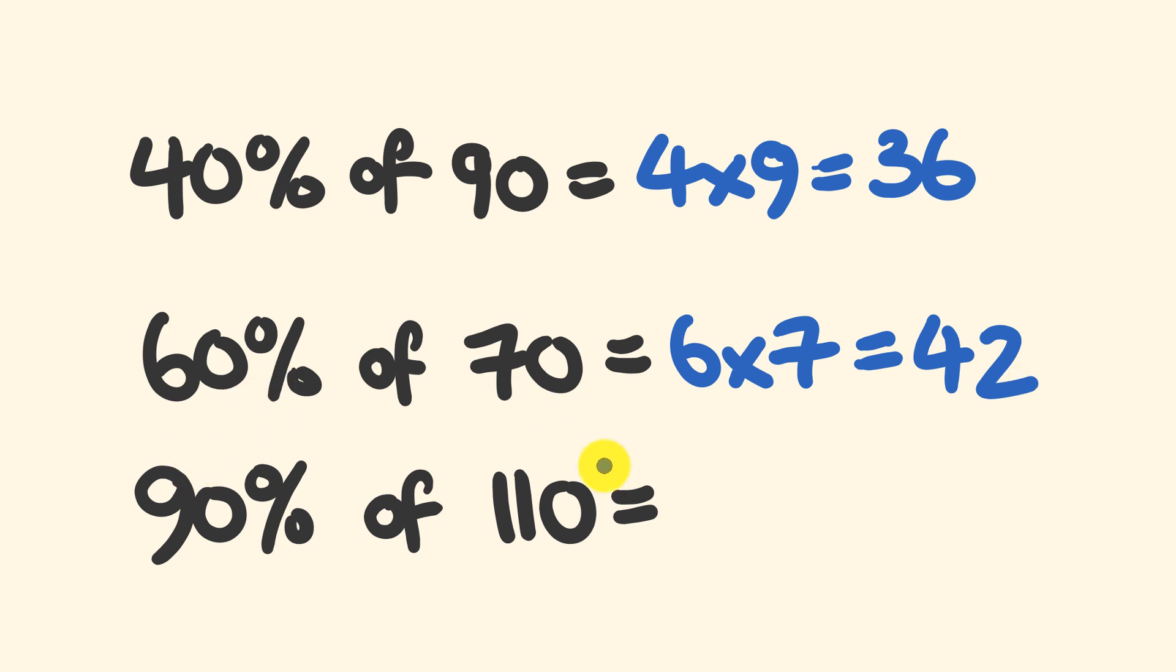And the last one we have is 90% of 110. Now dividing both of these sides by 10, we end up with 9 multiplied by 11. 11 nines, well, nice and easy. The answer is 99.